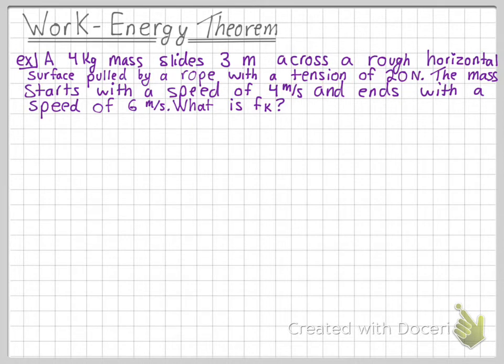A 4 kilogram mass slides 3 meters across a rough horizontal surface pulled by a rope with a tension of 20 newtons. The mass starts with a speed of 4 meters per second and ends with a speed of 6 meters per second. What is the kinetic friction force?